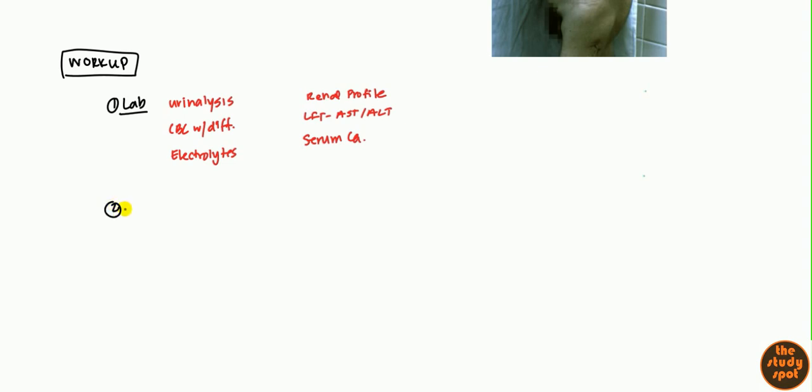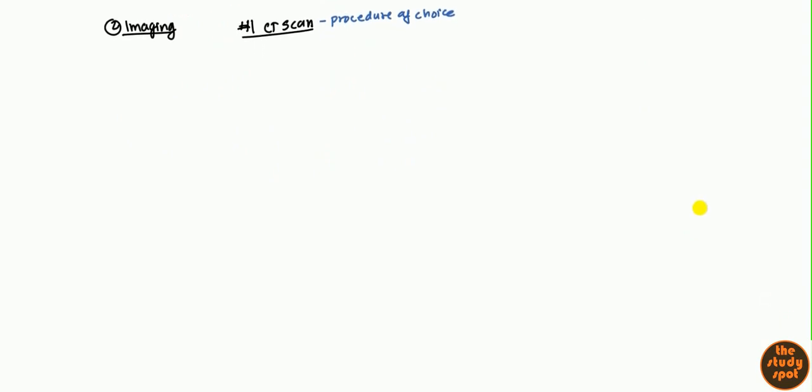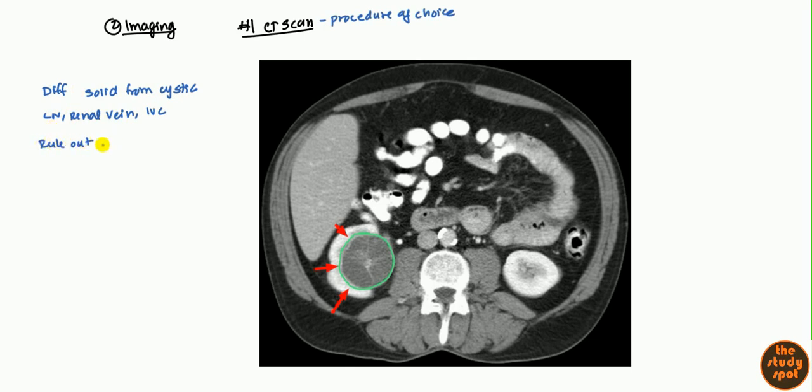After you've done all the labs, then you want to start going into imaging. The number one imaging test modality by far is the CT scan. That is definitely the procedure of choice. What you'll see here, this is a CT scan of the abdomen, a cut section. Where the arrows are pointing and what I'm outlining right now is the actual tumor. You can see it's very dark in color. CT scan not only identifies the tumor, but it can also help differentiate a solid from a cystic mass because you do need to rule out cystic problems. It can also help look at nearby lymph nodes, the renal vein, and even the inferior vena cava to see if there's been invasion.